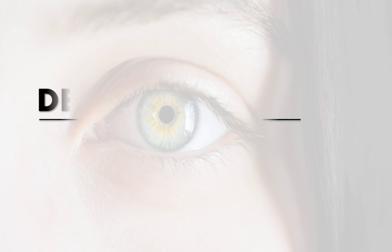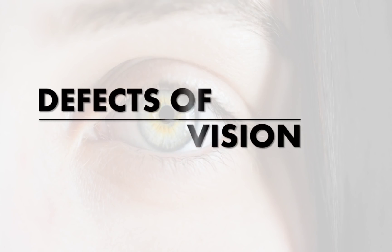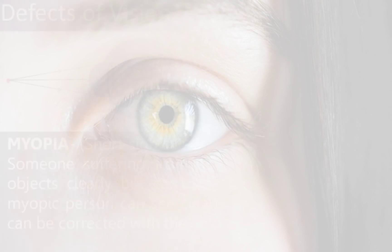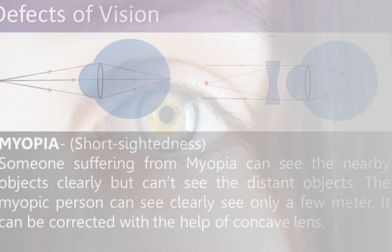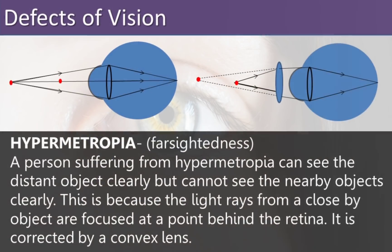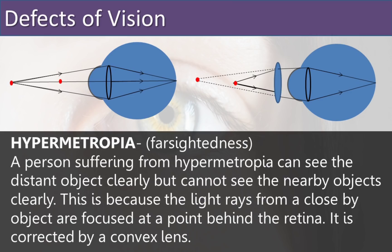Now let's see the defects of vision. The first one is myopia, or short-sightedness. A person suffering from myopia can see nearby objects clearly but cannot see distant objects. They can see only a few meters, and beyond that point objects are not clear. It can be corrected with the help of a concave lens.